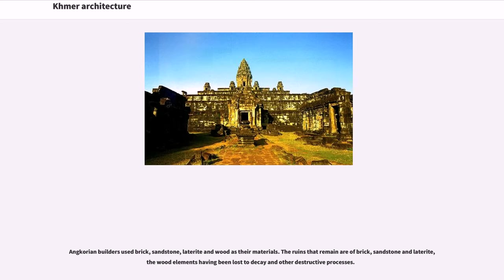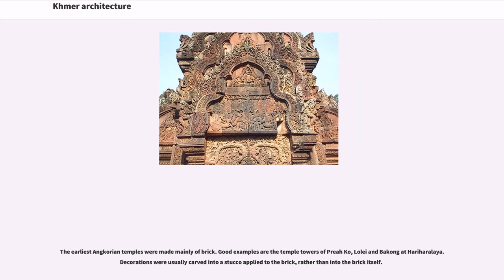Angkorian builders used brick, sandstone, laterite, and wood as their materials. The ruins that remain are of brick, sandstone, and laterite, the wood elements having been lost to decay. The earliest Angkorian temples were made mainly of brick; good examples are the temple towers of Preah Ko, Lolei, and Bakong at Hariharalaya. Decorations were usually carved into stucco applied to the brick, rather than into the brick itself.